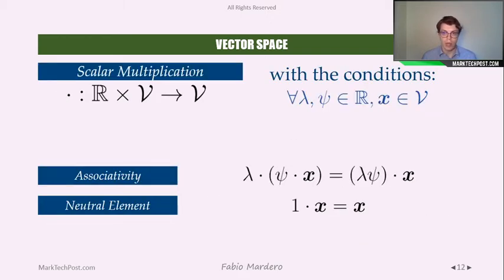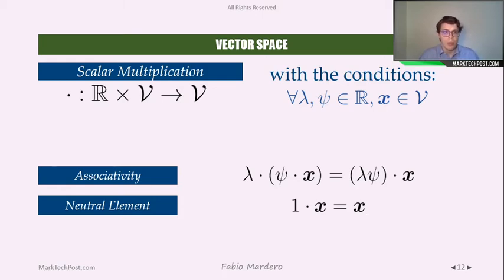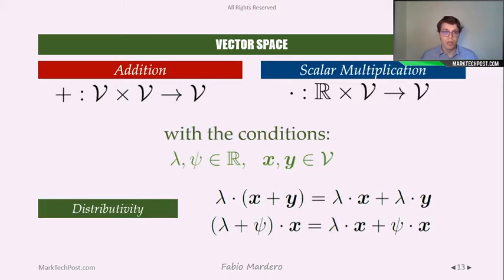Let's move on to scalar multiplication. Here the constraints are associativity and neutral element. Please note that the neutral element here is not zero — since we are talking about a scalar neutral element — but it is one. We define the neutral element such that if we multiply a vector with the neutral element, the result will be the vector itself. These properties may seem obvious, but we are talking about the basis of algebra and mathematics in general.